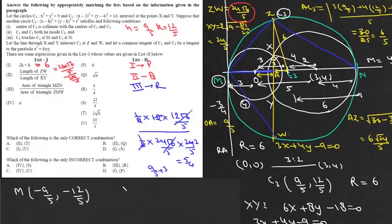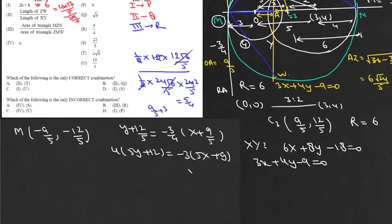So equation of this common tangent will be y plus 12 by 5 and it will be equal to minus 3 by 4 into x plus 9 by 5. Now this is 4 into 5y plus 12 and that will be equal to minus 3 into 5x plus 9. So its equation will be given by 15x plus 20y. Now this is 48 plus 27 plus 75 equals 0 or 3x plus 4y plus 15 equals 0.